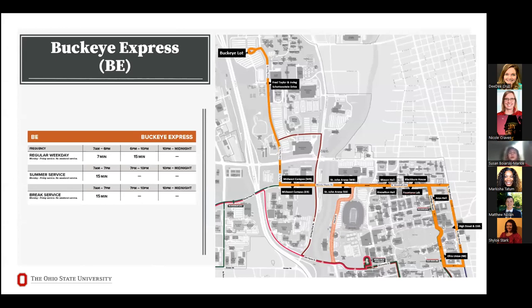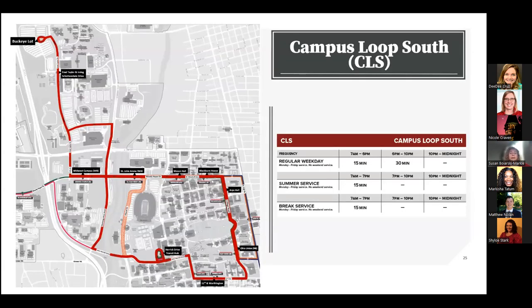Some popular bus routes: the Buckeye Express serves the Buckeye commuter parking lot and provides service to the north and east sides of campus. It comes every seven minutes until 6 p.m., then every 15 minutes. The Campus Loop South also serves the Buckeye parking lot, going counterclockwise. It also serves the medical center and south campus area and operates every 15 minutes from 7 to 6, then every 30 minutes. You don't have to ride it just to go out to the Buckeye lot — you can use it as a circulator around campus.